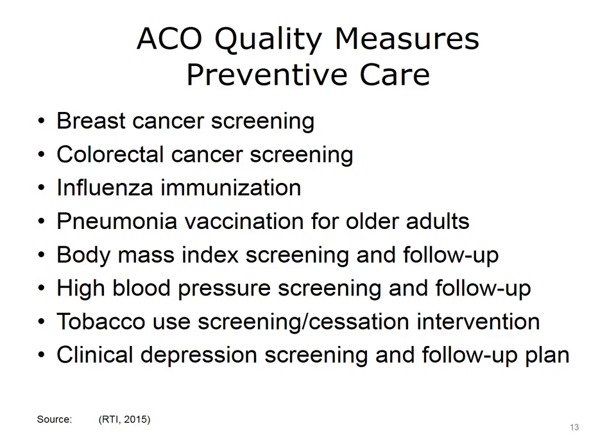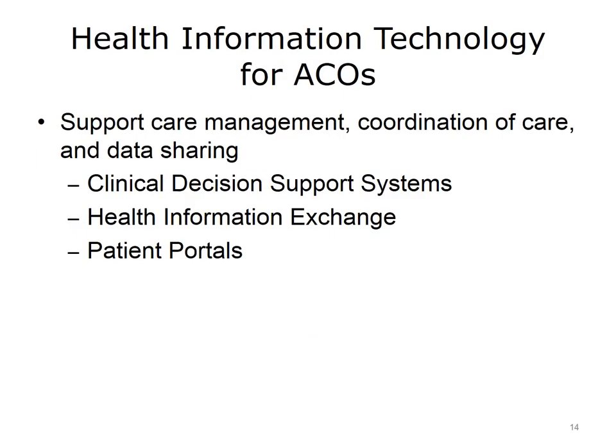The final domain of ACO quality measures focuses on preventive care. The measures include things like immunizations and also screenings and follow-up plans for conditions such as obesity, body mass index, tobacco use, high blood pressure, and clinical depression. These measures are typically identified through data collected in clinical information systems.